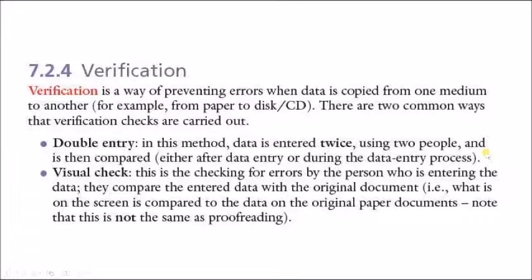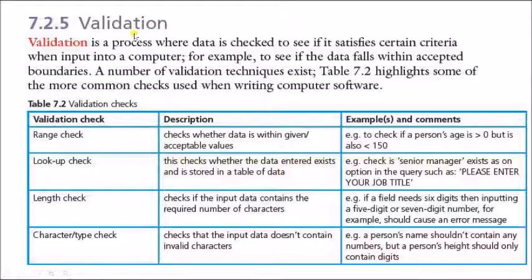After this, we will talk about validation. Verification is done by us as people. Validation is done by the system, by the computer, to check also the data is entered in the correct way. Validation is the process where data is checked to see if it satisfies certain criteria when input to the computer, for example, to see if the data falls within accepted boundaries.